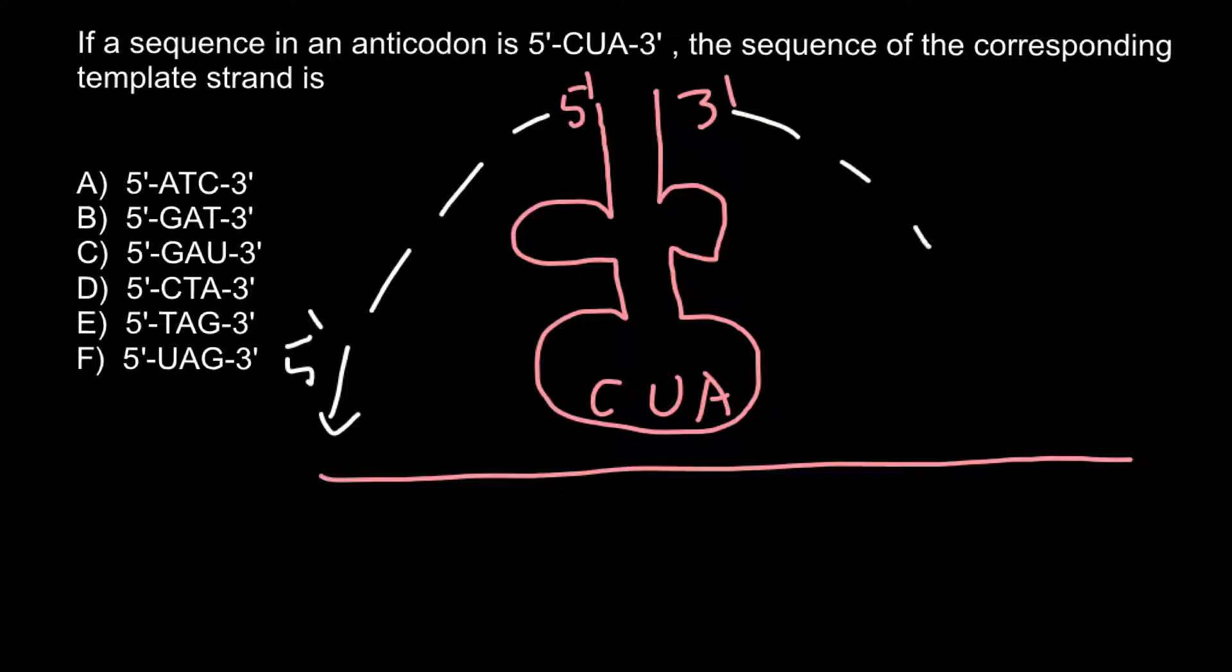Now imagine if we stretch this tRNA, we are going to have 5-prime here and 3-prime here. These are the prime ends of the tRNA. Then in the messenger RNA we are going to have 3-prime here and 5-prime here.